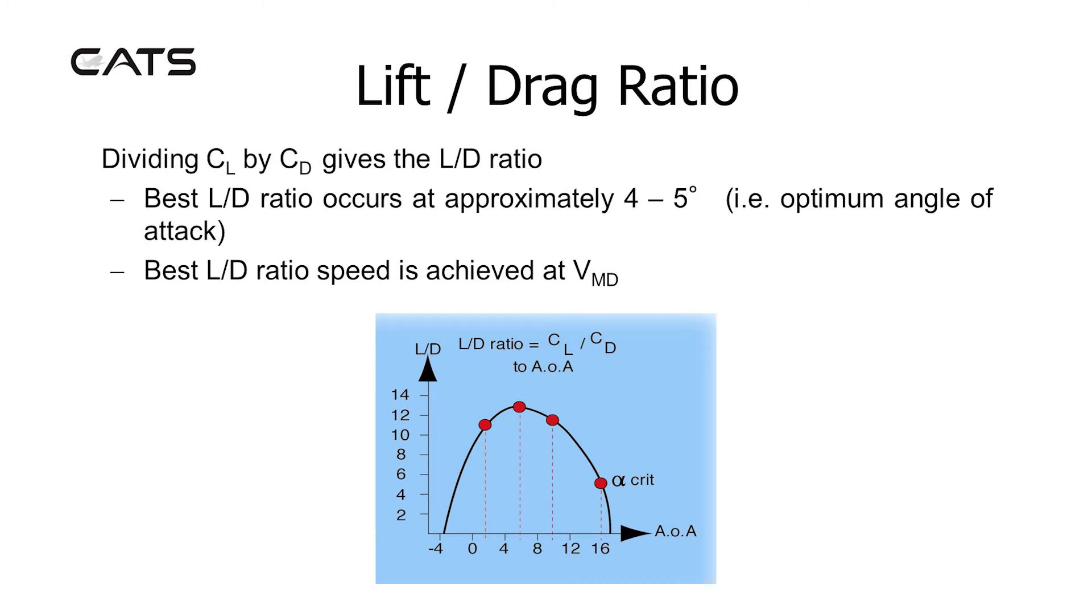Dividing CL by CD gives the lift to drag ratio. The best lift to drag ratio occurs at 4 to 5 degrees angle of attack. The best lift to drag ratio speed is achieved at VMD, the velocity for minimum drag.